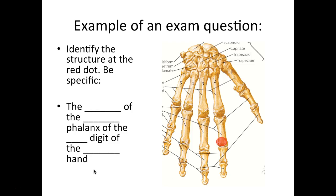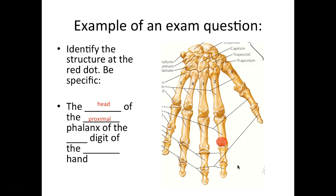To fill in the answer, start small and build big. First determine if the marked structure is a base, body, or head — for example, this is a head. Then determine if it's a proximal, middle, or distal phalange — this is proximal. Then identify the digit — this is the second digit. And lastly identify the hand — this is the right hand.